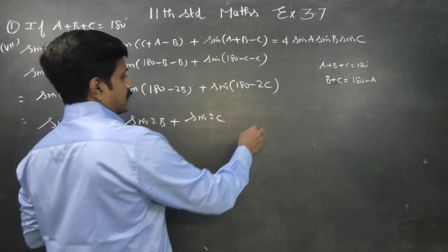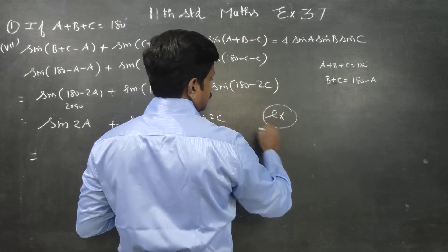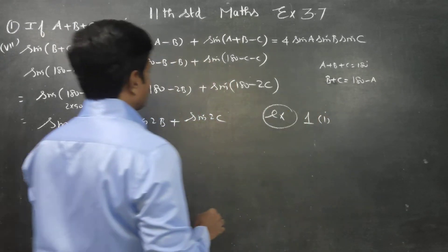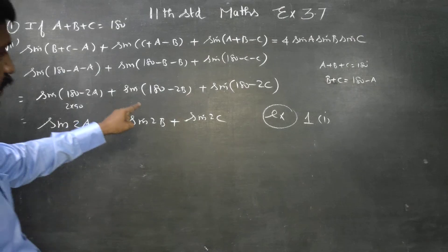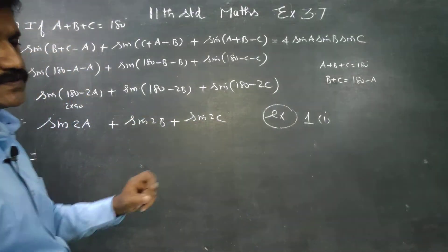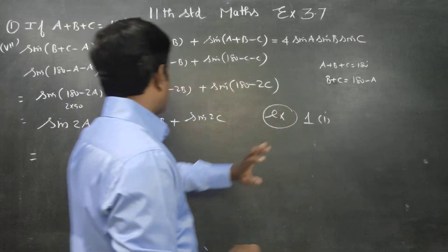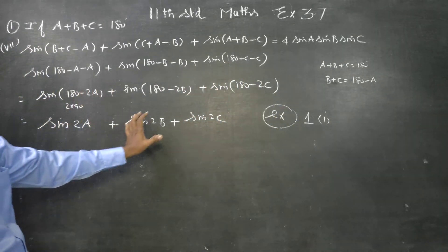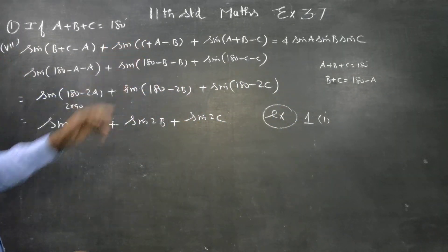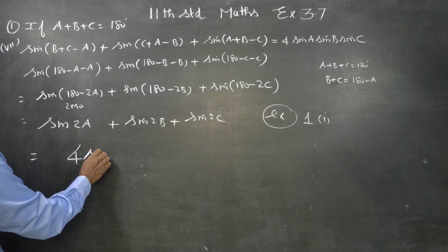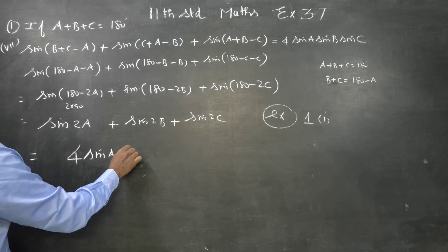Same exercise, in same exercise, sum number 1, first subdivision we have proved sin 2A, sin 2B, sin 2C. In the same exercise 3.7, first sum, first subdivision we have proved sin 2A plus sin 2B plus sin 2C is 4 times sin A, sin B, sin C.